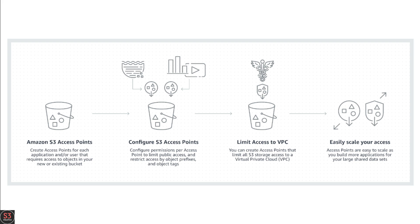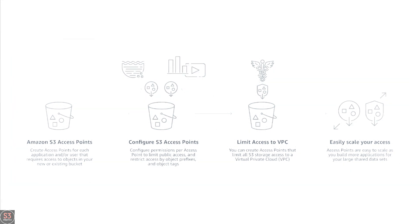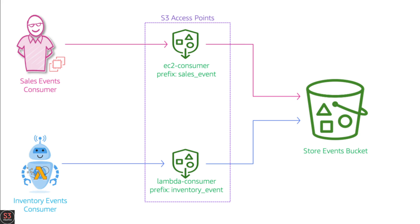Now let's look at a real-time example. Say we have a bucket storing events for our store. We have two different customers: a sales event customer and an inventory event customer. For both customers we create a different access point — a sales event access point and an inventory event access point — so each can access the relevant objects.